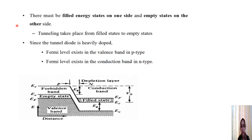The first condition for the working of a tunnel diode is that the barrier thickness must be very small — a charged particle can tunnel through the barrier according to quantum mechanics. The second condition is that there must be filled energy states on one side and empty states on the other side. When observing the energy band diagram, tunneling must occur from the filled states to the empty states.